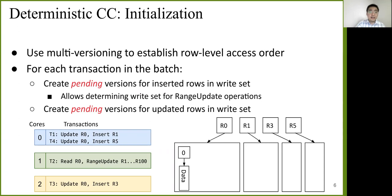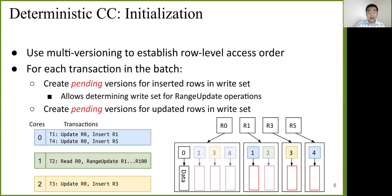For each transaction in the batch, we create pending versions for inserted rows in the write set first. Now we do this because this allows us to determine the write set for range update operations. In this example here, T2 range update from R1 to R100, and then now T2 can simply do a scan in the database and it's going to find R1, R3, and R5. After this, we can create pending versions for all updated rows in the write set.